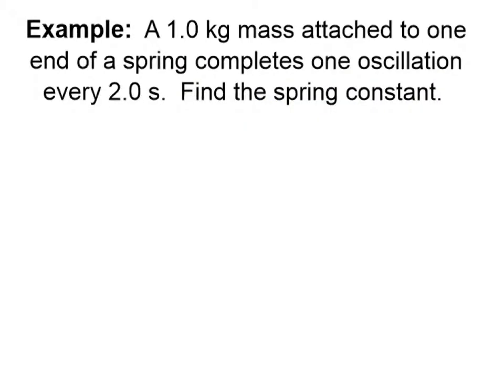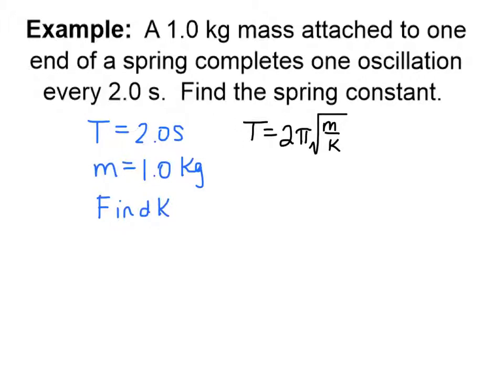Let's do a quick problem. Let's say we have a one kilogram mass attached to an end of a spring and it completes one oscillation every 2.0 seconds. Find the spring constant. We know the period is 2.0 seconds, time it takes to complete one oscillation. The mass is 1.0 kilograms and we would like to find the spring constant. We can use our equation for the period of a mass-spring system and plug our values in and solve for the spring constant.